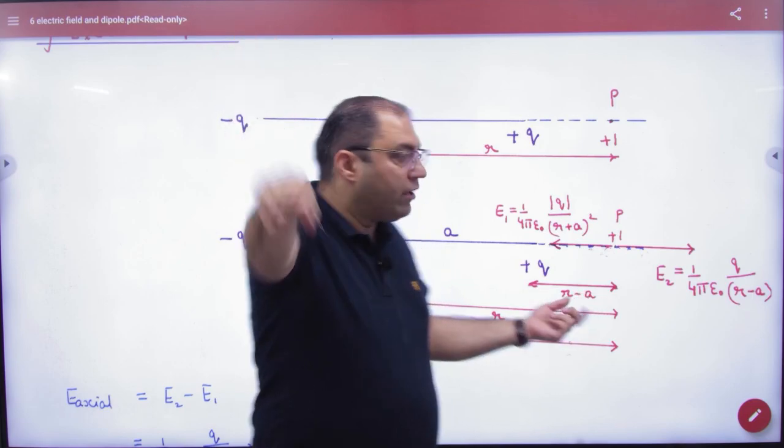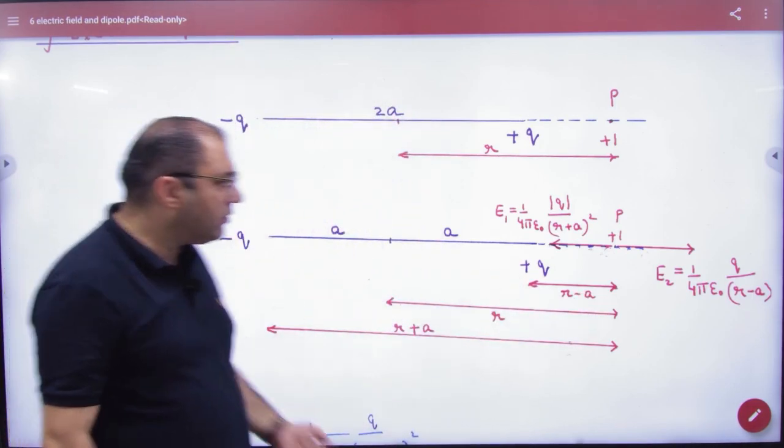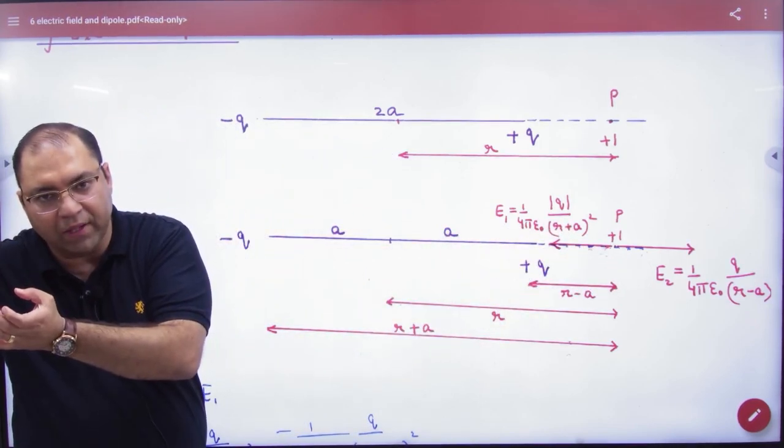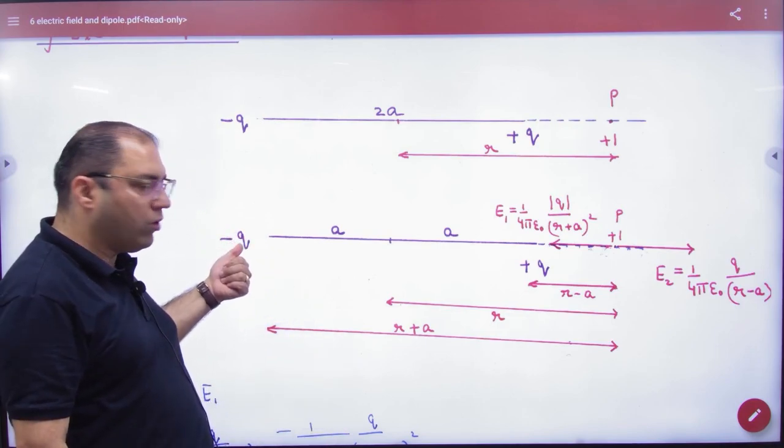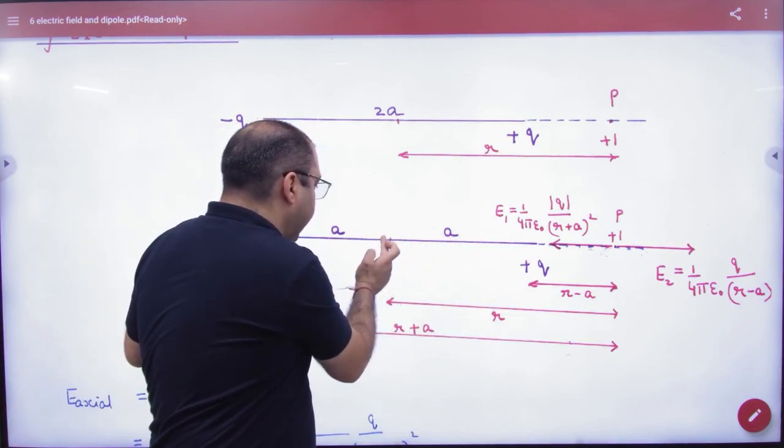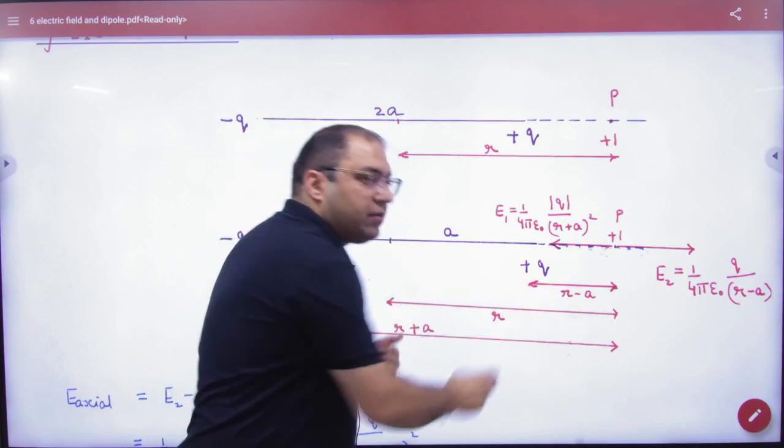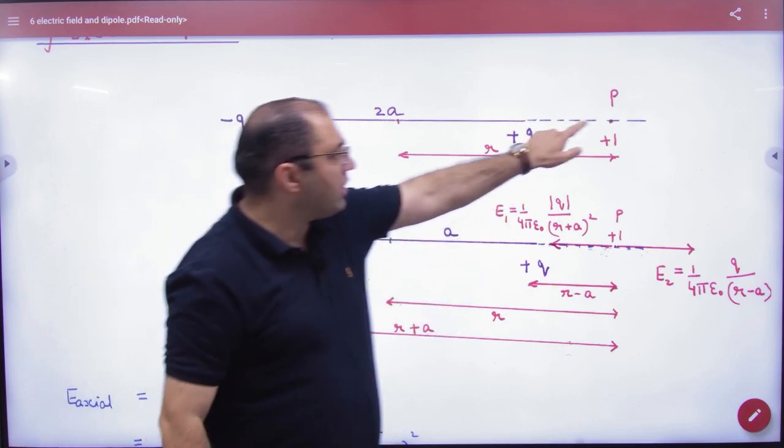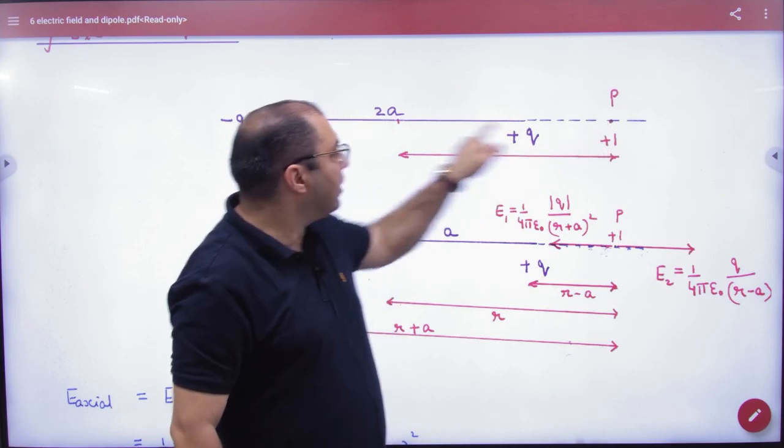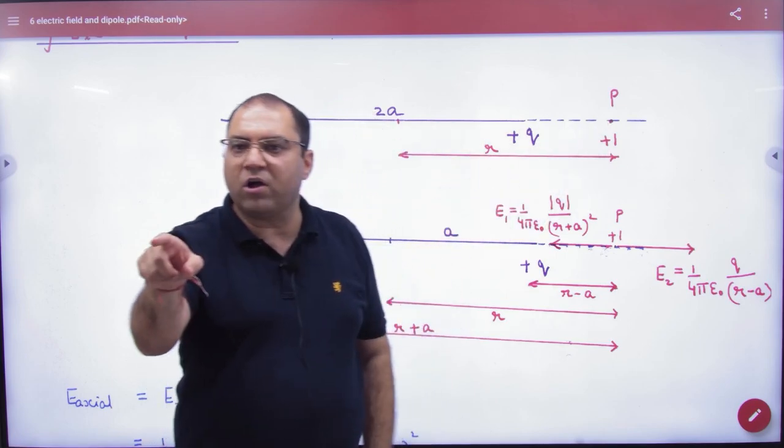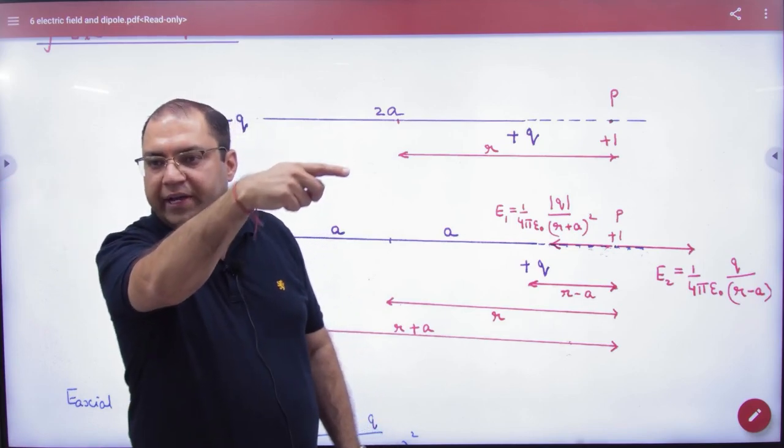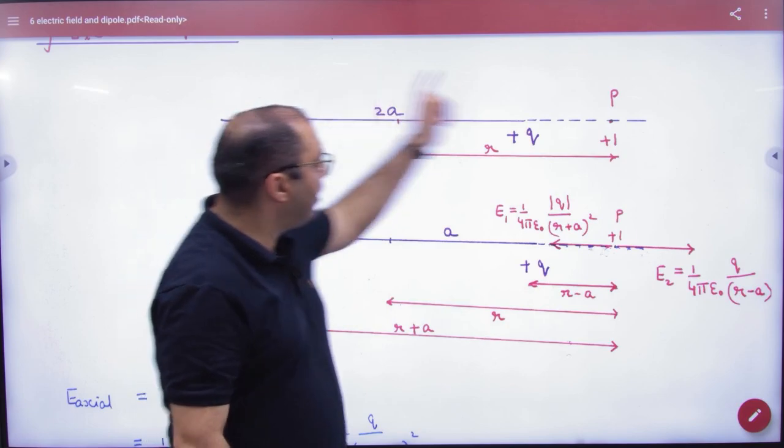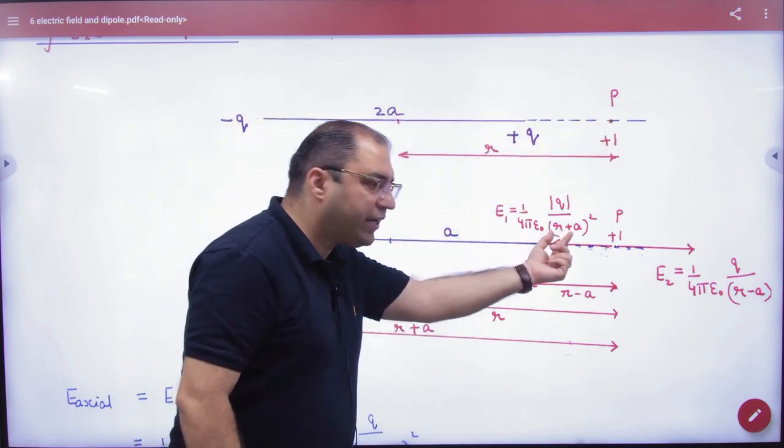Then what will minus q do? Minus q and plus test charge will attract. So the vector will come this way. Magnitude will be 1/(4πε₀) times q divided by the distance squared. This distance is a plus r. From the center of the dipole, r is measured. So from center, this distance is r plus a. So it becomes 1/(4πε₀) × q/(r + a)².